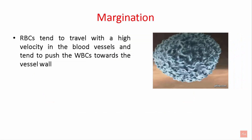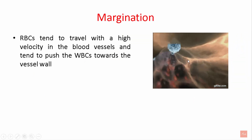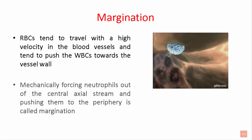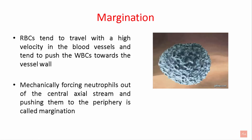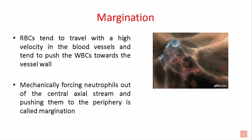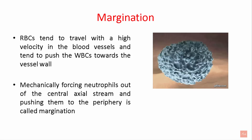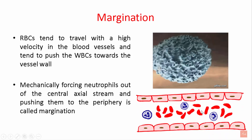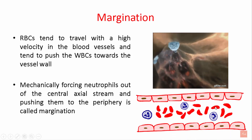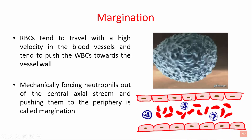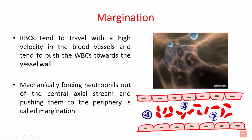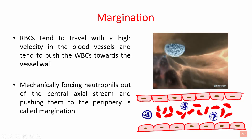What is margination? The RBCs have a very high velocity, as you can see in this image, and they tend to push away the neutrophils or WBCs towards the vessel wall. This mechanical forcing of neutrophils out of the axial stream and pushing them into the periphery is called margination. Due to the high volume and low speed of the WBCs, they are pushed close to the endothelium, which is why leukocytes come in contact with the endothelium frequently.